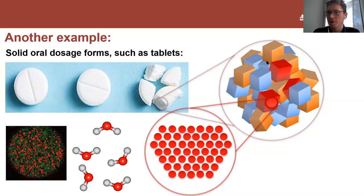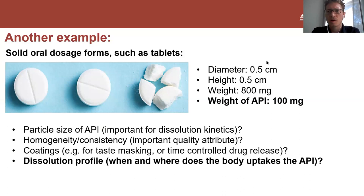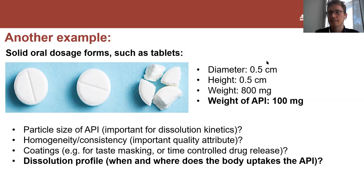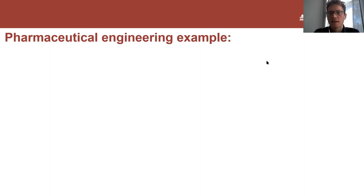So back to the properties - we learned more about what's actually in the tablet. You might think about the particle size of the API crystal: this is important for the dissolution kinetics, the smaller they are, the faster things dissolve. Very important for pharmaceuticals is homogeneity - we want all our tablets to have the same composition. Also important are coatings: many tablets have coatings, either for taste masking or, more importantly, for time-controlled drug release. That brings us to the most important property: the dissolution profile, which determines when and where our body uptakes the API.